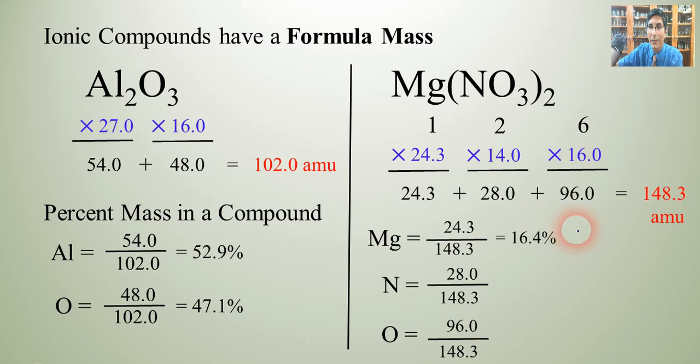So for magnesium that's about 16.4 percent. For nitrogen it's 18.9 percent and for oxygen when you divide that out it's about 64.7 percent. So that means that if you could take the magnesium nitrate there and harvest out just the magnesium you'd get 16.4 percent of the original mass of the compound. That's what that means. And likewise for those other elements.